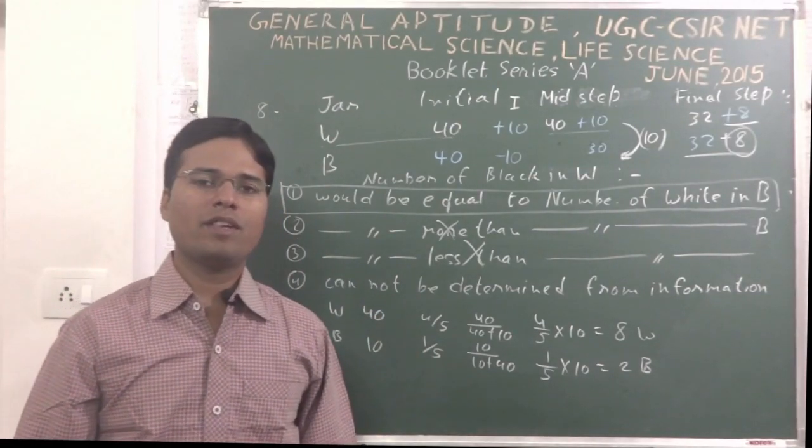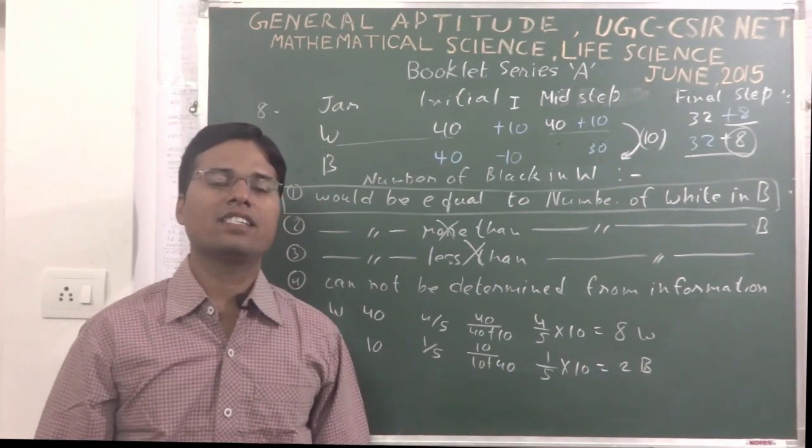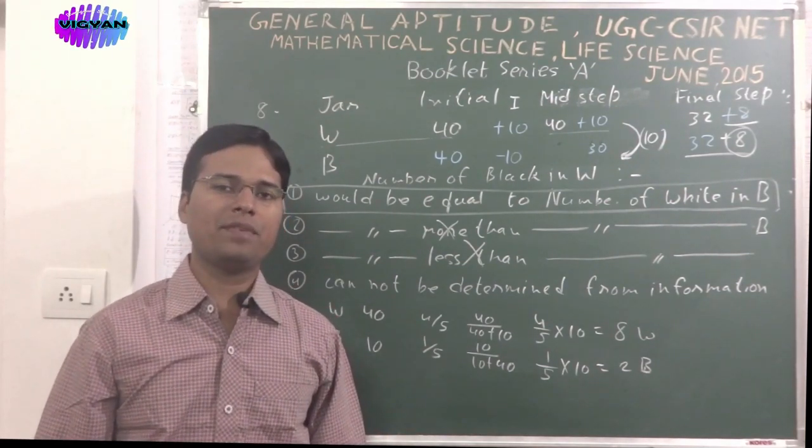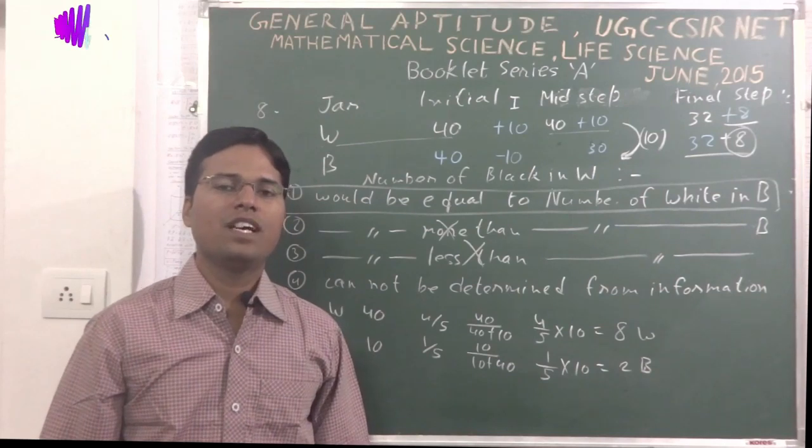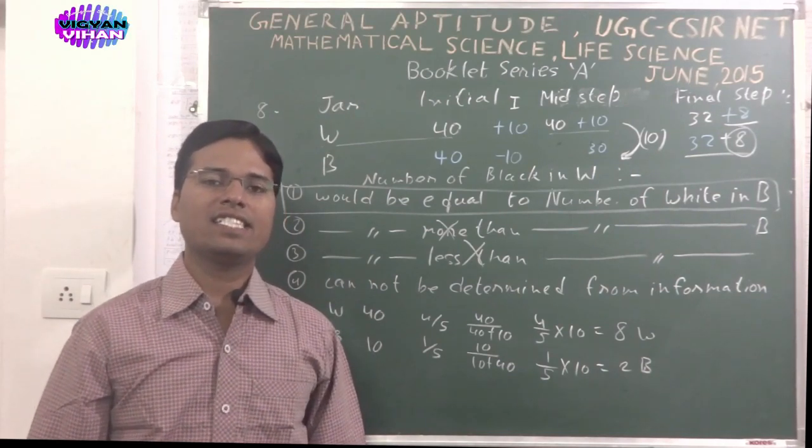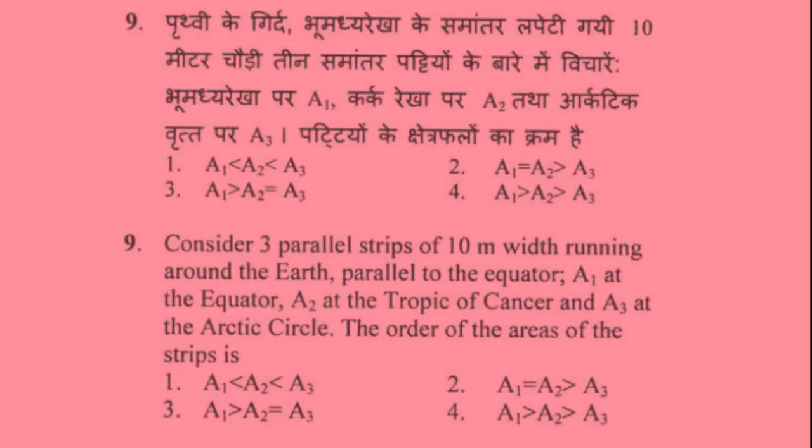The PDF of those problems and the June 2015 paper can be downloaded from our Google Drive link as given in the description box. Consider 3 parallel strips of 10 meter width running around the Earth parallel to the Equator: A1 at the Equator, A2 at the Tropic of Cancer, A3 at the Arctic Circle. The order of the area of the strips is, we would have to select the correct answer from given 4 options.